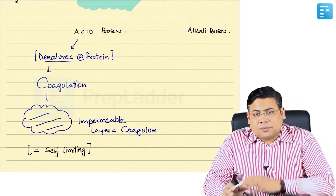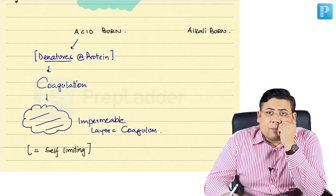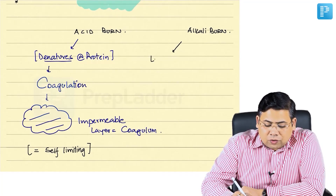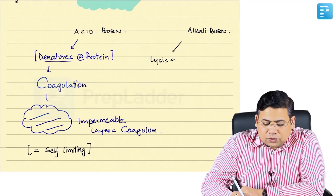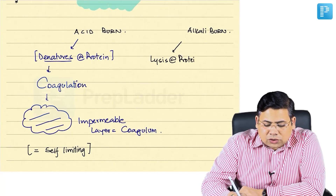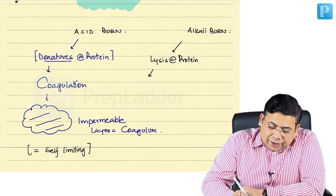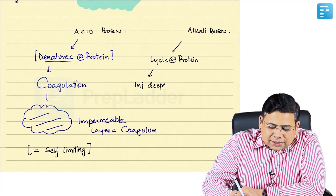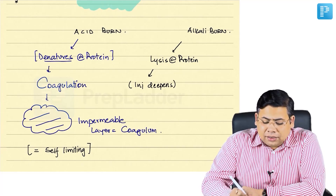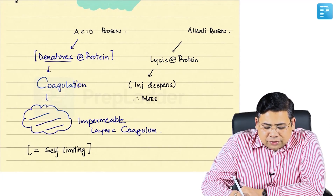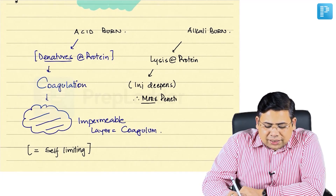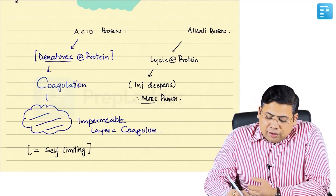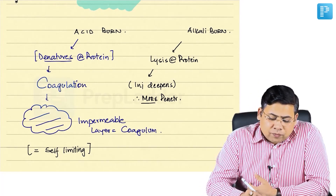Now let's talk about alkali burns. Acid burns are self-limiting. The problem with alkali burns is different — they don't cause denaturation; they cause lysis of protein. Because of this lysis of protein, the injury keeps deepening, resulting in more penetration and more perpetuating injury.